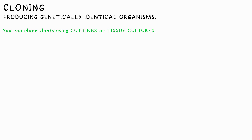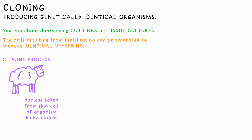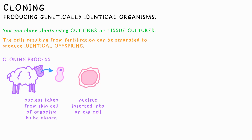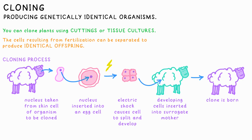Cloning animals is more difficult. One way is splitting embryo cells just after fertilisation and putting them into surrogate mothers — essentially forcing identical twins, though you don't know exactly what you're getting until they're developed. If you have a fully grown animal you want to clone, take the nucleus from one of its cells, say in its skin, then insert that into an egg cell. It's essentially now a fertilised egg. Shocking the egg jumpstarts the development process, and it's then inserted into another female's womb where it continues to develop.